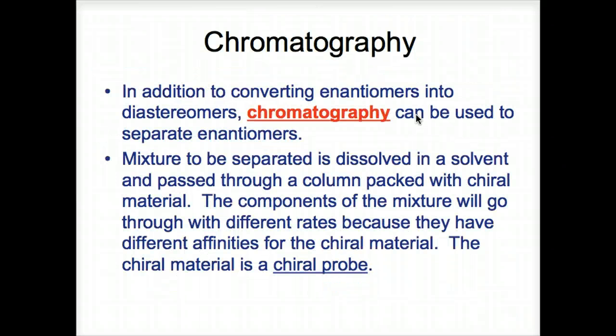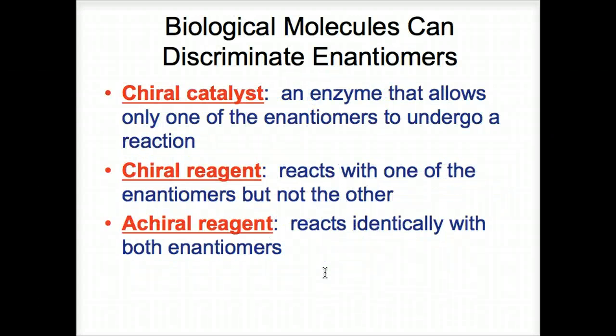Another technique of separation is known as chromatography. In addition to converting enantiomers into diastereomers, chromatography can be used to separate enantiomers. Mixture to be separated, dissolved in a solvent and passed through a column packed with chiral material. The components of the mixture will go through at different rates because they have different affinities for the chiral material in the column. The chiral material is a chiral probe. We can use chromatography to separate.